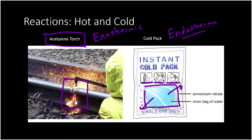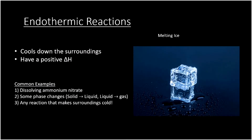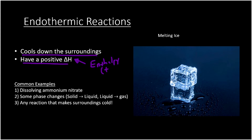Let's take a closer look at endothermic reactions. They cool down the surroundings, so anytime the surroundings get cold, we know we have an endothermic reaction. They also have a positive delta H. Delta H is the variable representing enthalpy — the heat released or absorbed by a chemical reaction. If heat is absorbed, we have a positive enthalpy, meaning our reaction is taking up energy and making the surroundings cold.